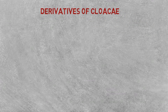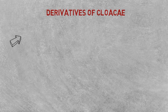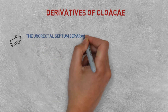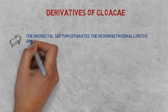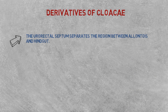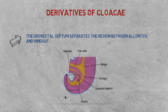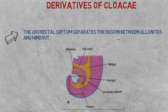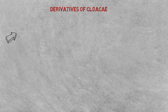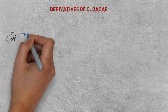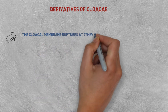Let's begin with derivatives of cloaca. There is a term called the urorectal septum, which separates the region between the allantois and the hindgut, as we can see in the diagram. The next term is the cloacal membrane.